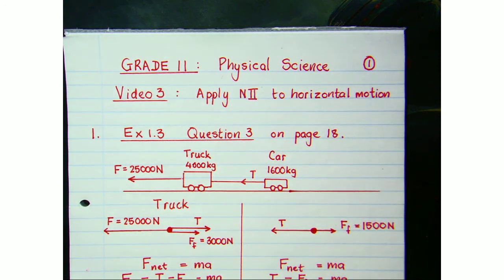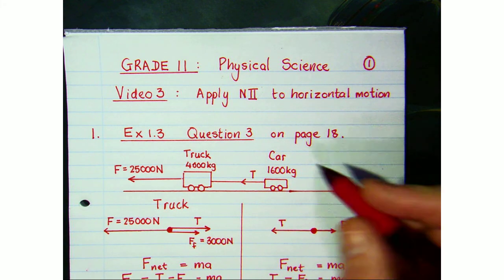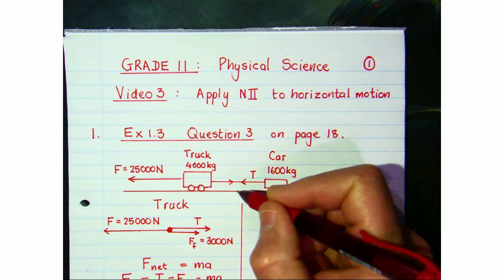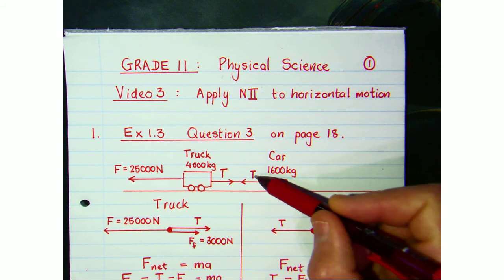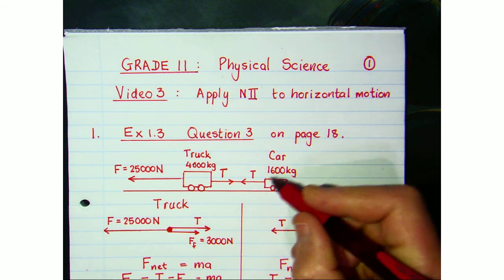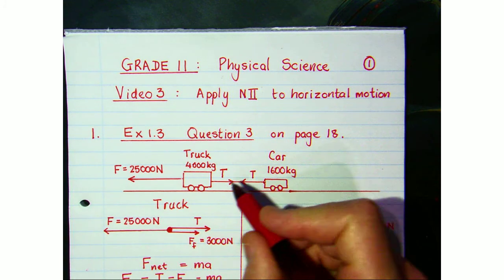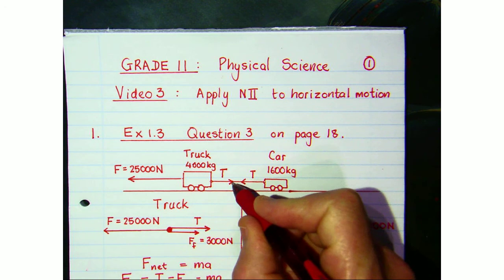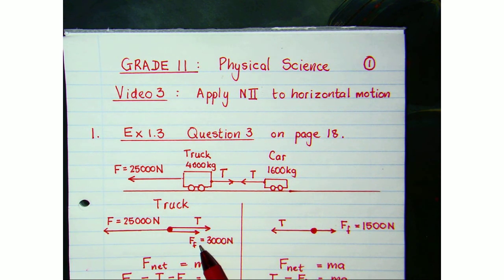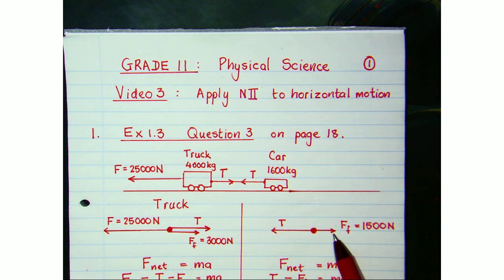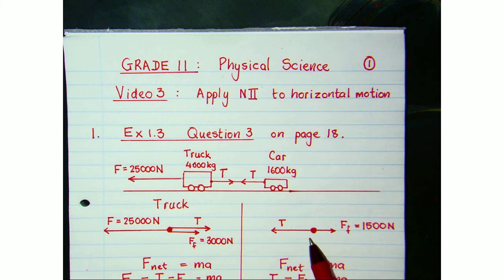There's a forward force on the car from the tension in the chain, but at the same time there's a backward force on the truck from that same tension. These two tensions are equal — the tension throughout the chain is the same — but the tension acts to the left on the truck and to the right on the car. The truck also experiences a frictional force, and the car has that forward tension force and a backward frictional force.